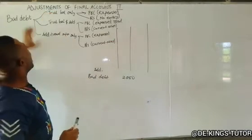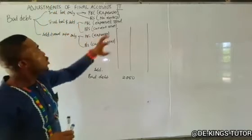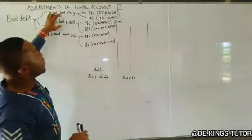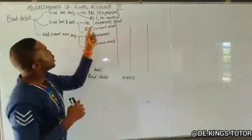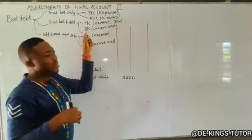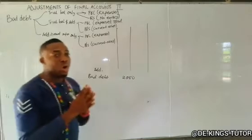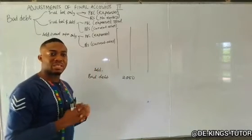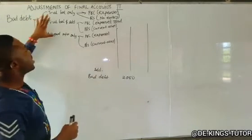These are the three ways bad debt can occur. First, it appears only in the trial balance — post to profit or loss as expenses, no other entry required. Second, it appears in both the trial balance and additional information — sum them up, post total to the expenses side of profit or loss, while the additional information amount goes to the balance sheet to reduce debtors. Third, when it appears only in additional information — post to profit or loss as expenses, then deduct from the debtors figure in current assets.